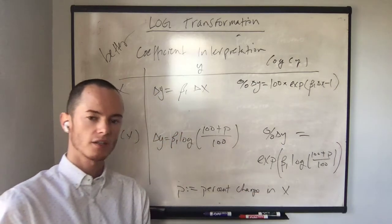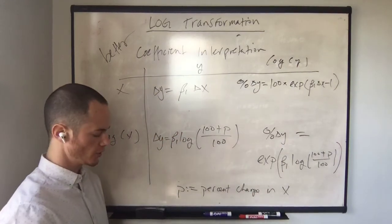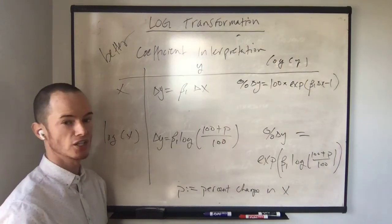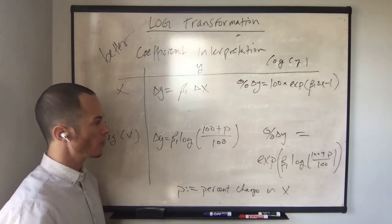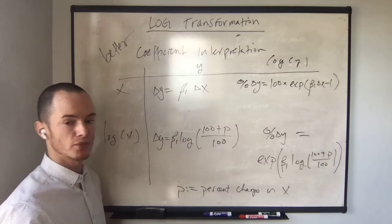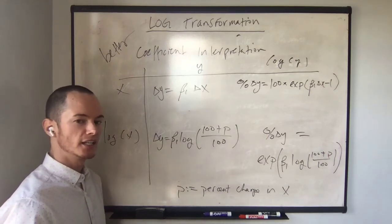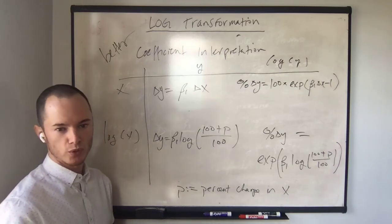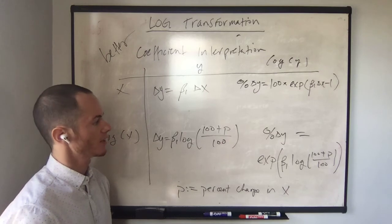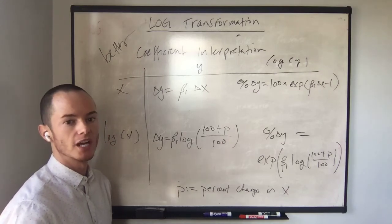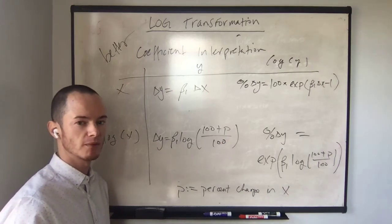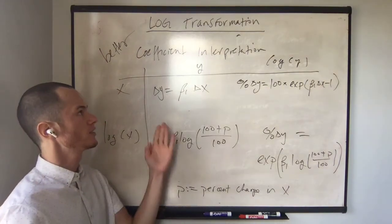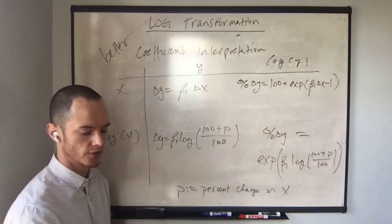So these are better coefficient interpretations, especially in the case where the change in x is larger. If we're thinking about a one unit change in x or a one percent change in x, then the interpretations in the previous table will do just fine. But if we're thinking about a 10 percent change in x or a 10 unit change in x, if we're starting to think about the effect of x on y for larger changes in x, then we need to refer to these interpretations.